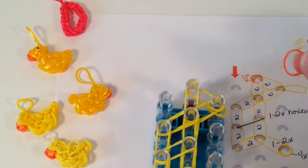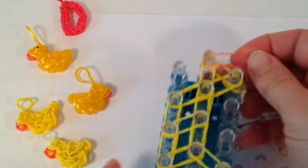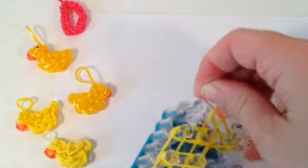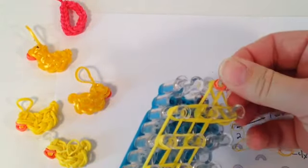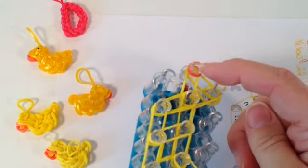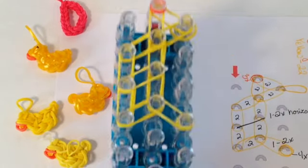And the last capping type of band we need to do is the orange band for the beak, and that'll get wrapped around that peg three times. So a three time cap band. Now we're ready to loom.